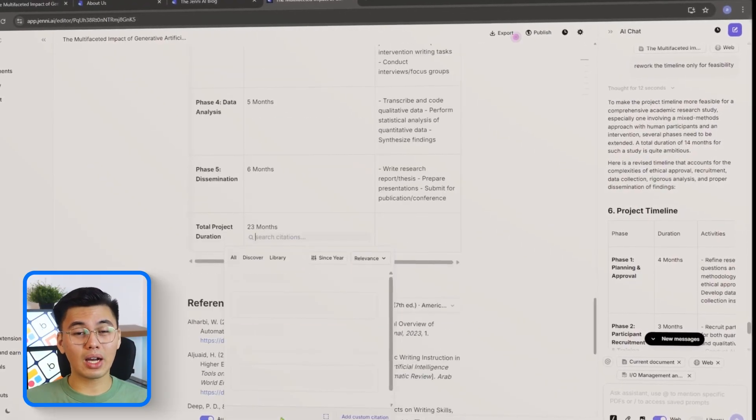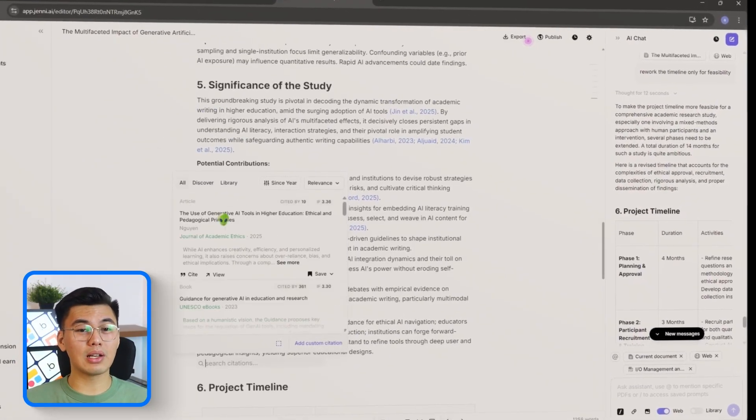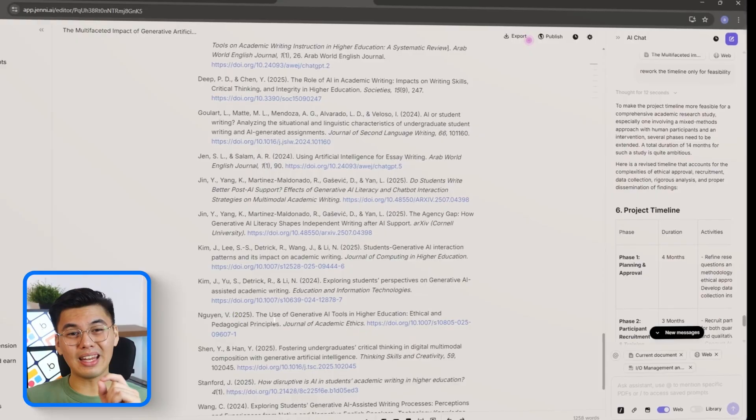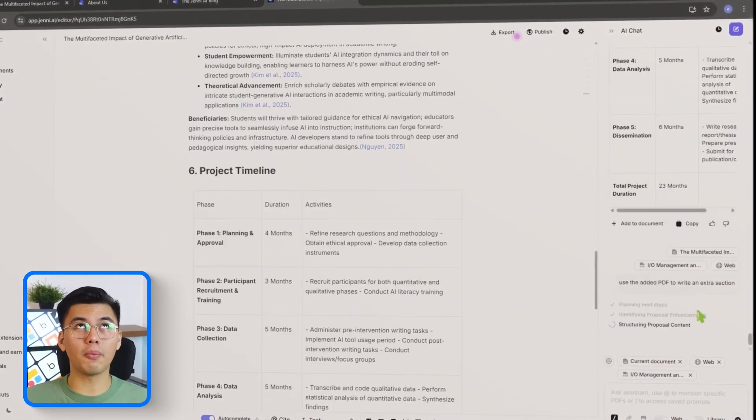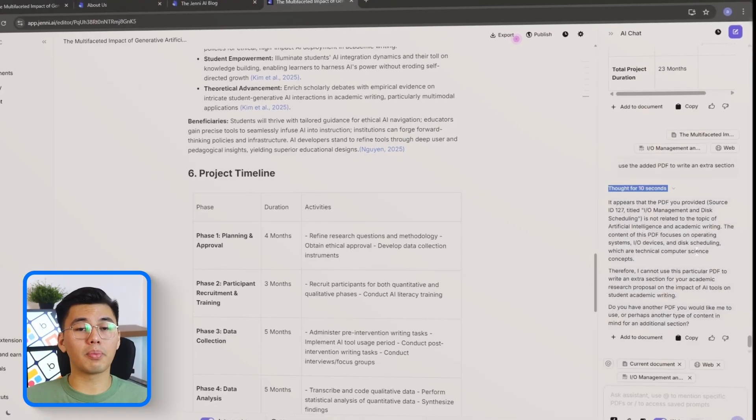Jenny can ground your writing in that document, pull accurate reference details, and generate a formatted entry automatically. It still needs a human review, but it takes a huge amount of manual work off your plate.